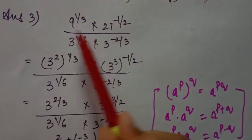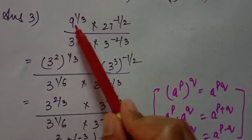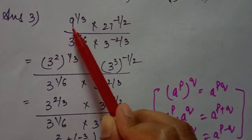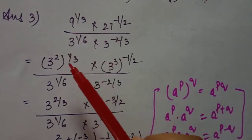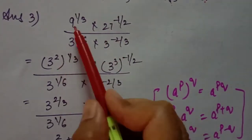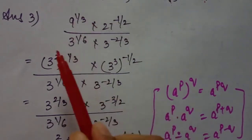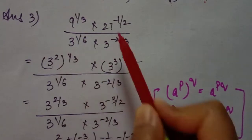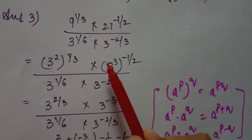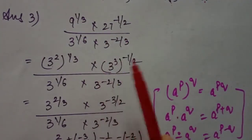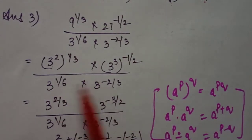Next question: simplify this expression. The first step is to convert all numbers using prime factorization in their lowest form. 9 equals 3 squared, and 27 equals 3 cubed, since 27 is 3 times 3 times 3. The remaining terms stay the same.